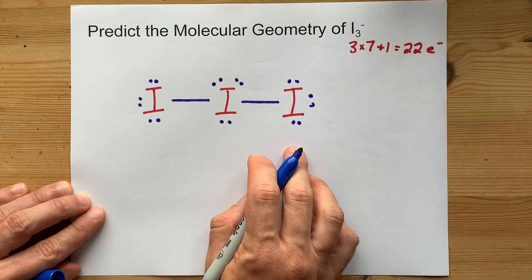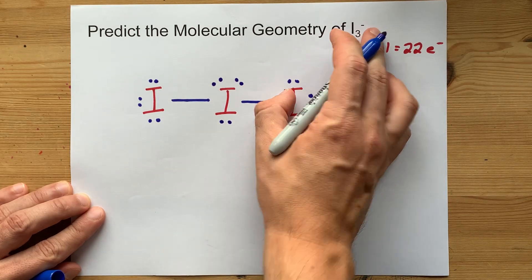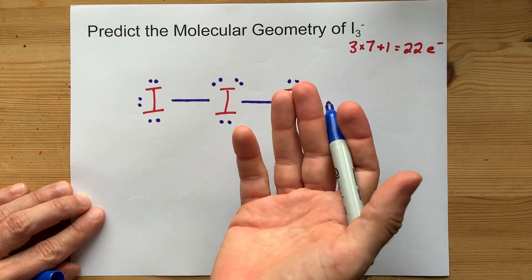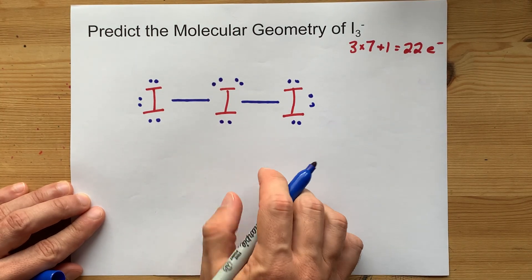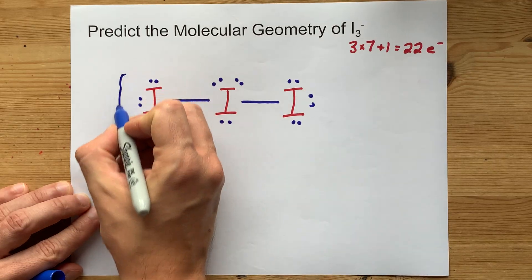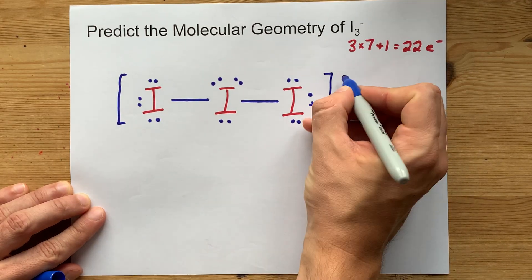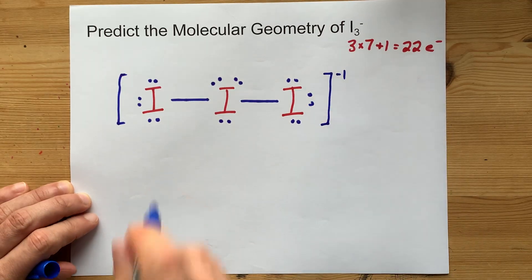This is my Lewis structure for I3 minus. They all satisfy the octet rule. I mean, this one actually has an expanded octet, but the central atoms are most likely to do that. And for the final Lewis structure, if there's a charge, you usually put it in square brackets and show the charge in the top right corner.